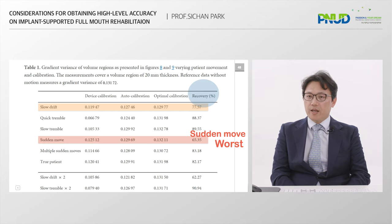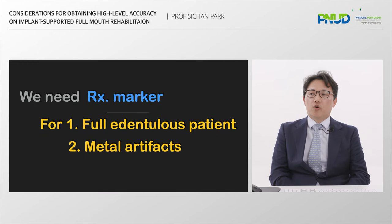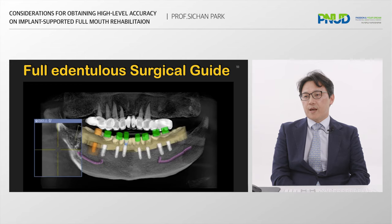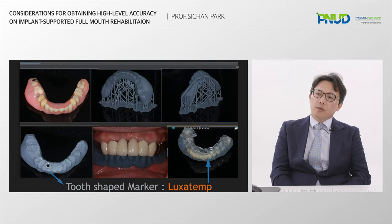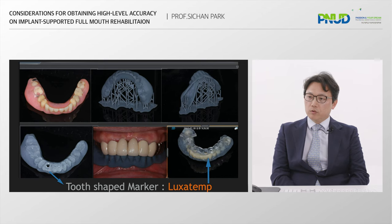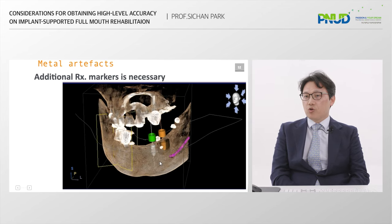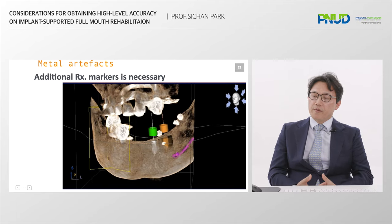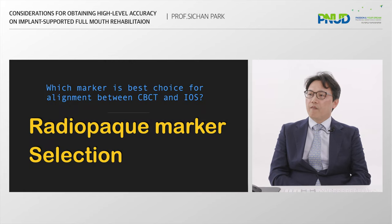Before taking CBCT, tell the patient not to move. For full arch edentulous patients, we need a radiographic marker. Full edentulous patient surgical guide needs two CBCT scans. We should place resin — the so-called radiographic marker — into the denture. This is a case from about three years ago where I made a tooth-shaped marker in a broad area. When you have metal artifacts in your CBCT, please add a radiographic marker before taking the CBCT scan and intraoral scan — it is very helpful for accurate alignment.